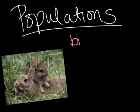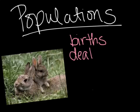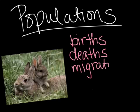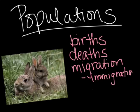The four factors are the number of births, the birth rate, the number of deaths or the death rate, and then migration. There are two types of migrations. There's immigration with an I, and then emigration with an E.